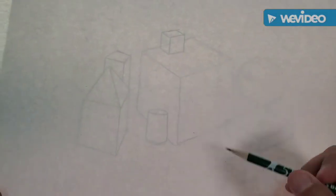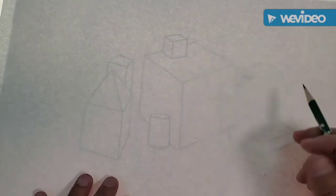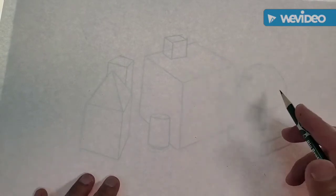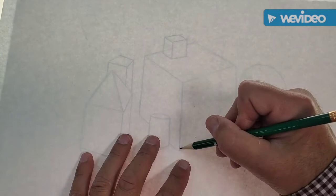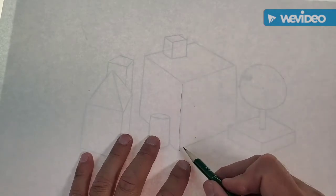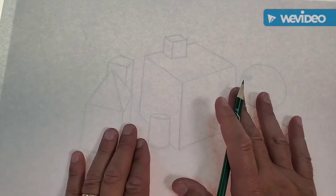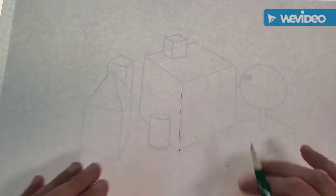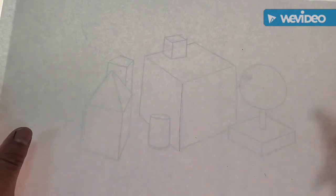Now I'm going to trace it with a regular number two pencil, and I can use my straight edge to do that. And the key here, this is the key word, super light. I want those lines to be really extremely light, because when I'm done, I don't want my drawing to have big, bold lines around it. Got it?